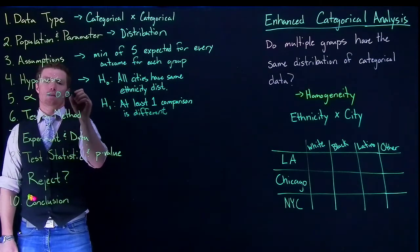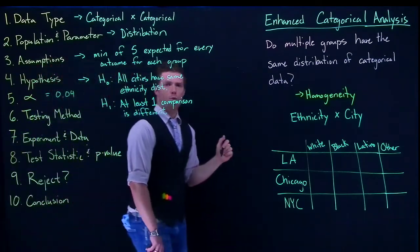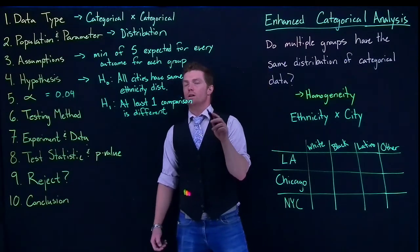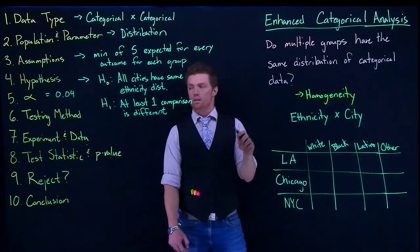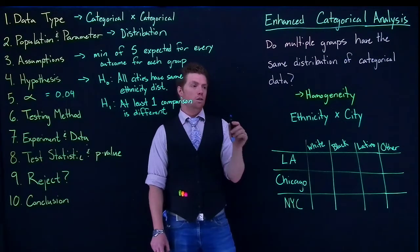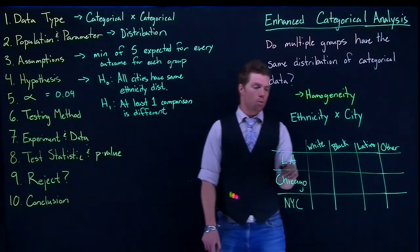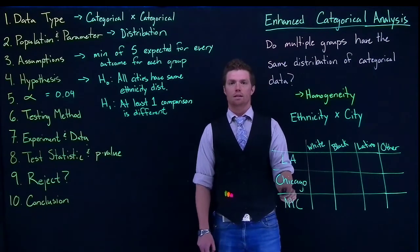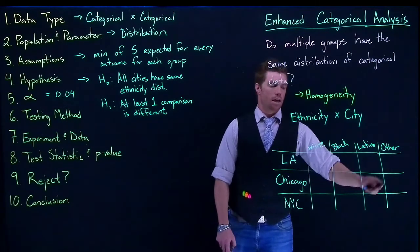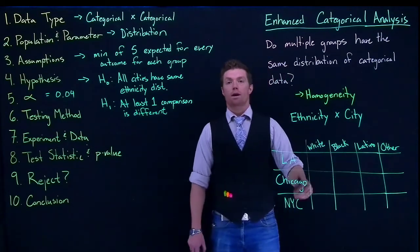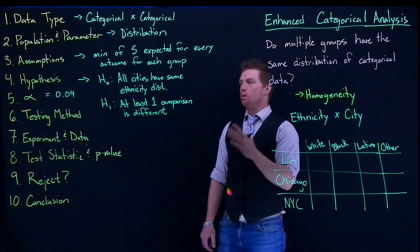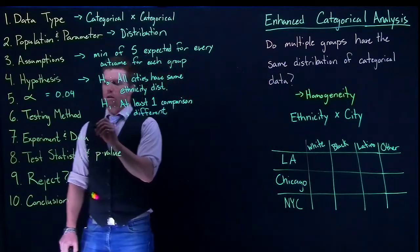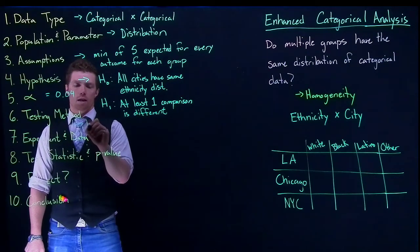We can set our alpha at 0.05 or 0.04, something along those lines. The testing method is really important here: we went and looked at these three specific cities, measured their ethnicities, and are comparing those to one another. That testing method lets us know that we are doing the homogeneity test.